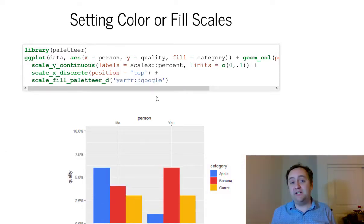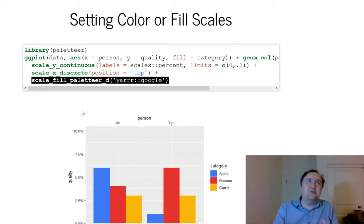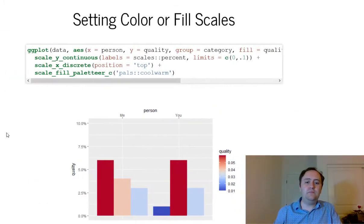Now, for this, when you load the paletteer package, you're going to want to look through all the palettes to see what looks good. But once you've found one, you can add it very easily with the scale fill paletteer underscore D or scale fill paletteer underscore C for continuous or scale color paletteer C or scale color paletteer D. All those apply to the different axes that we might need to fill in for.